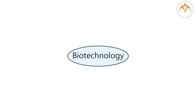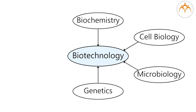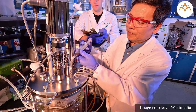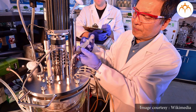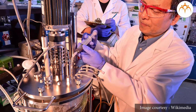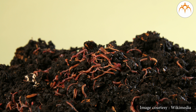We can say that modern biotechnology is an integrated biological science involving understanding of subjects like biochemistry, cell biology, microbiology, genetics, molecular biology, and genetic engineering, to name a few. Modern biotechnology has impacted human life in the 21st century to a large extent in various areas like agriculture and food industry, medical and pharmaceutical industry, and environment and waste management, to name a few.